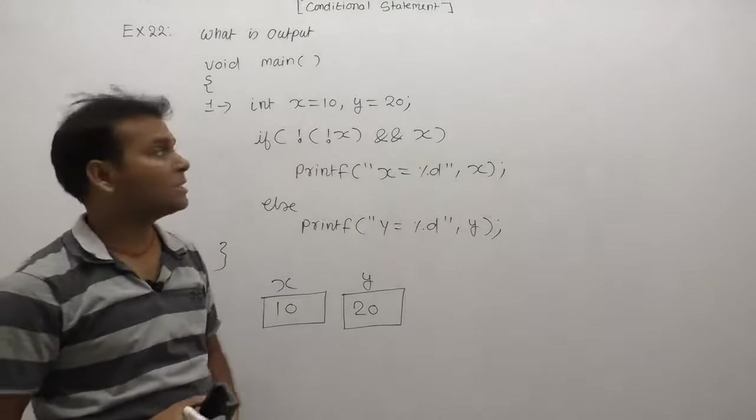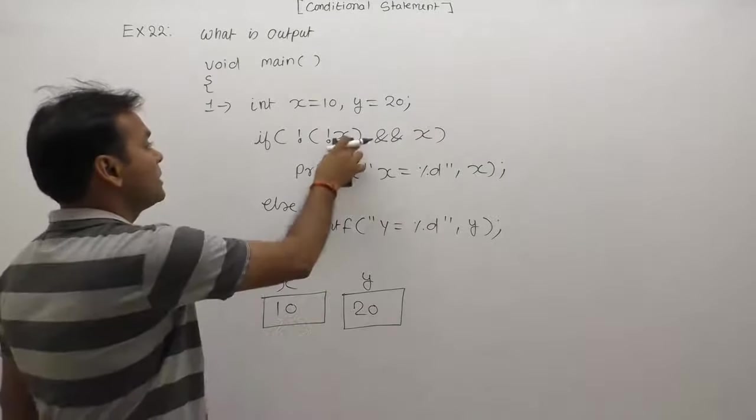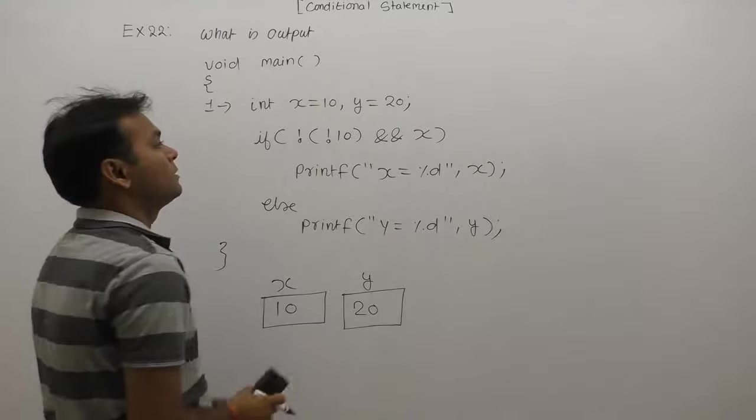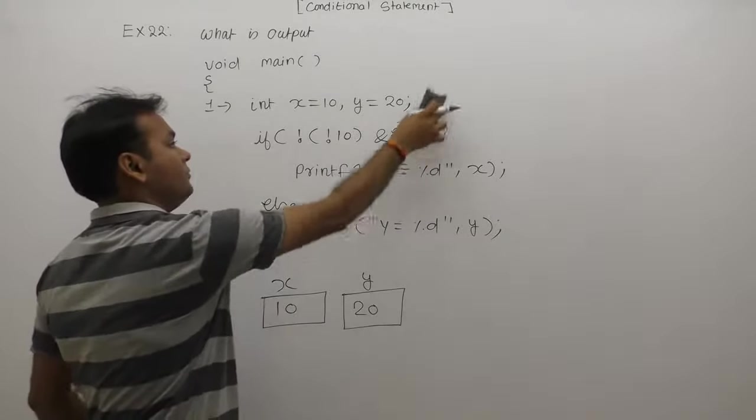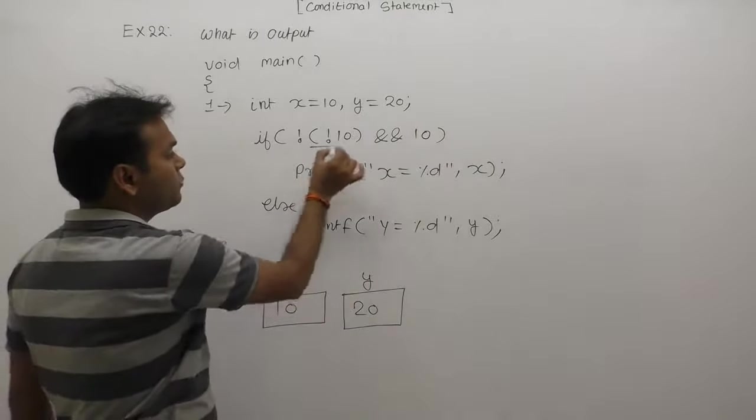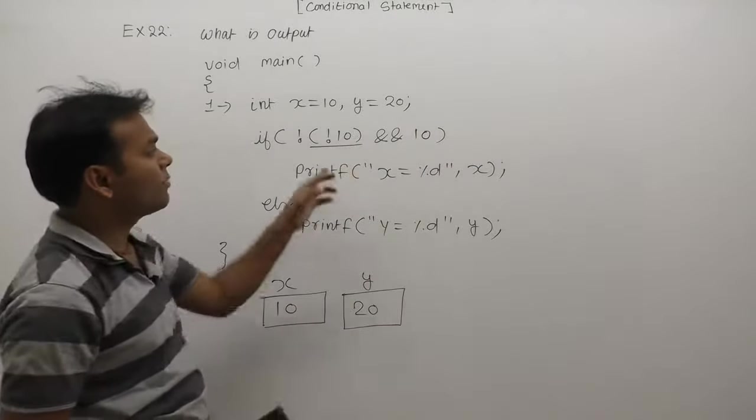Wherever variables appear, at those places we will replace variables with their values. At x's place, we replace with value of x. Next, according to the brackets, we apply the not operator.